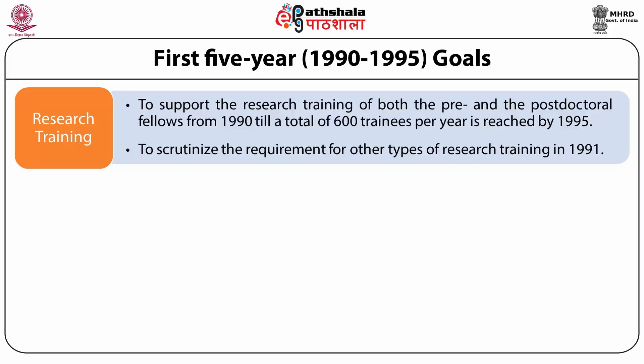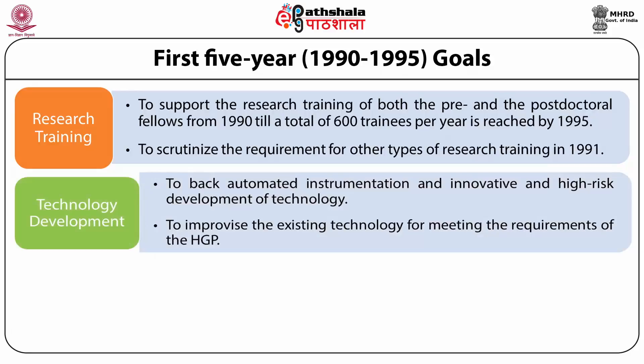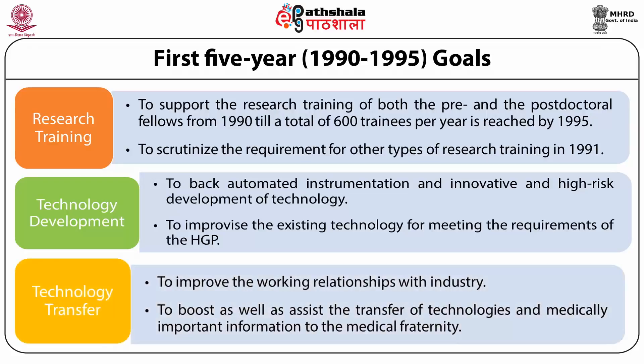It also involved scrutinizing the requirement for other types of research training in 1991. The next goal was technology development, involving backing of automated instrumentation and innovative high-risk technology development to meet the requirements of the HGP. The last goal was technology transfer, which involved improvement in working relationships with industry and assisting the transfer of technology and medically important information to the medical fraternity.